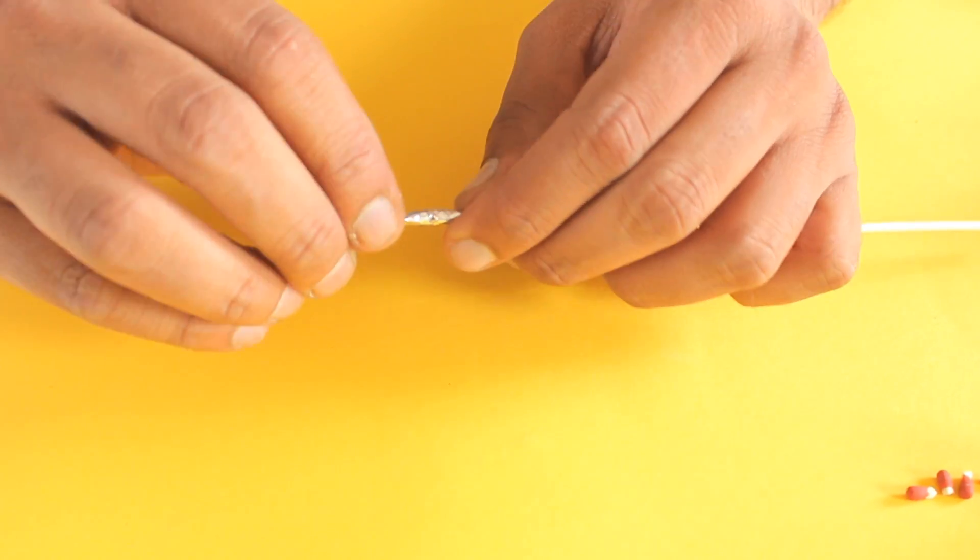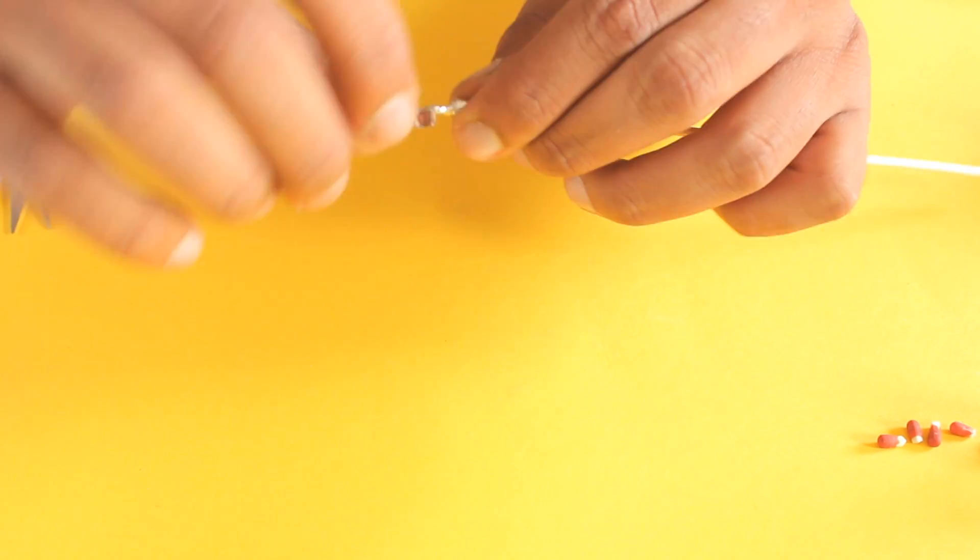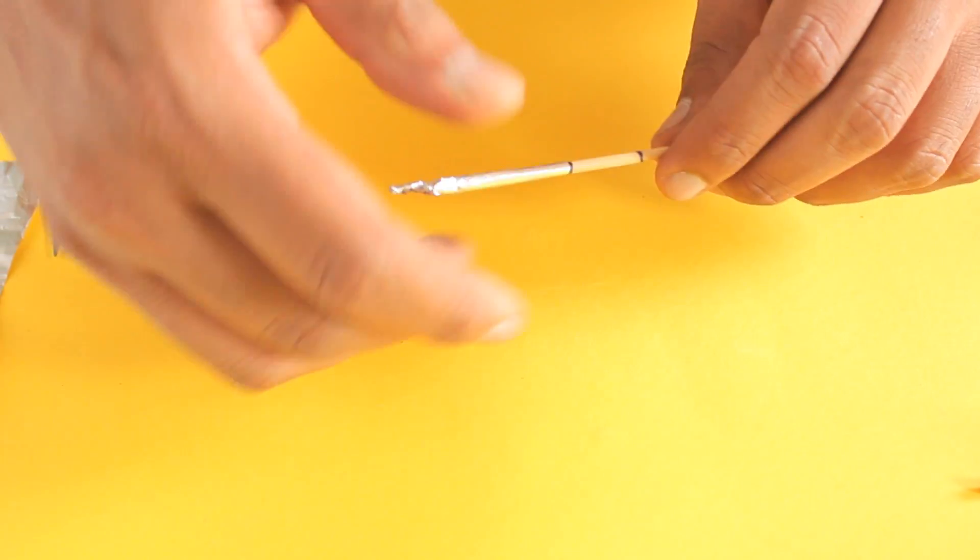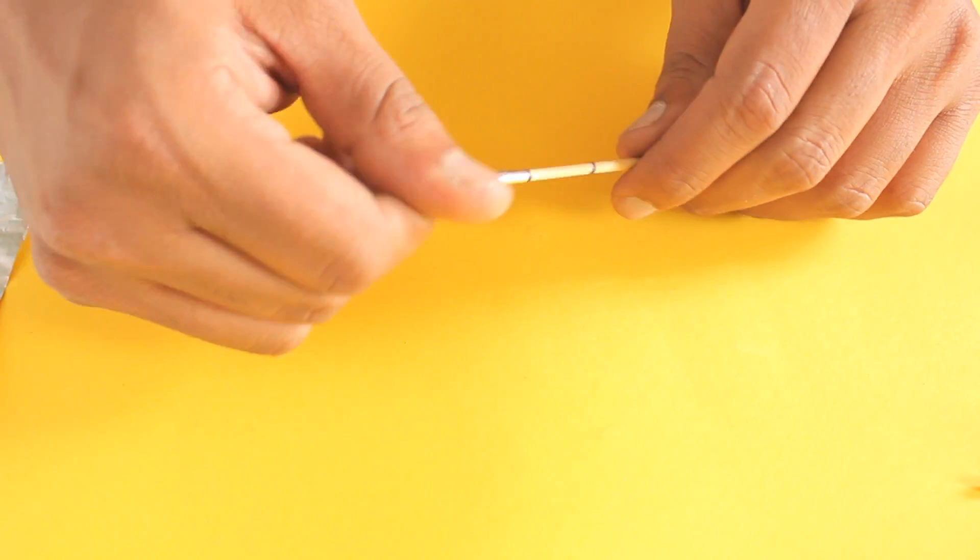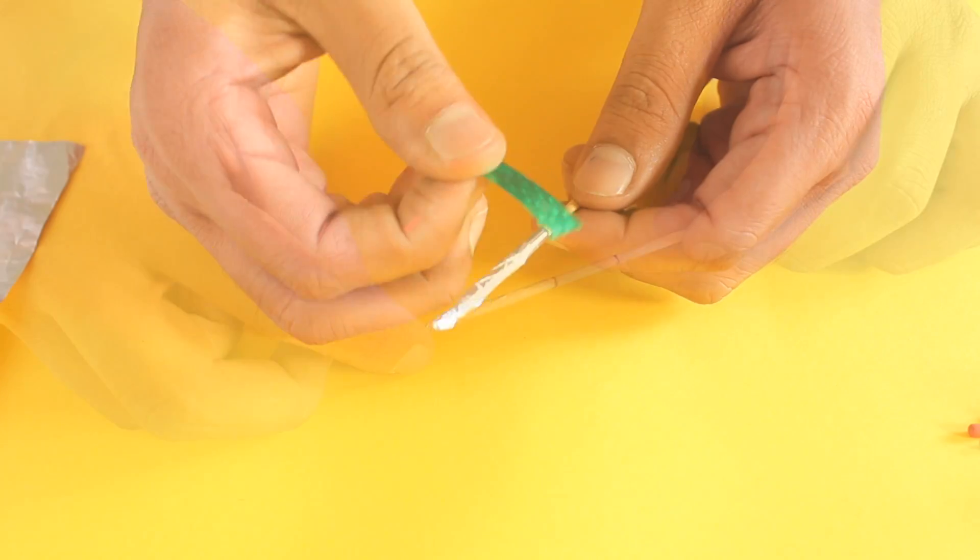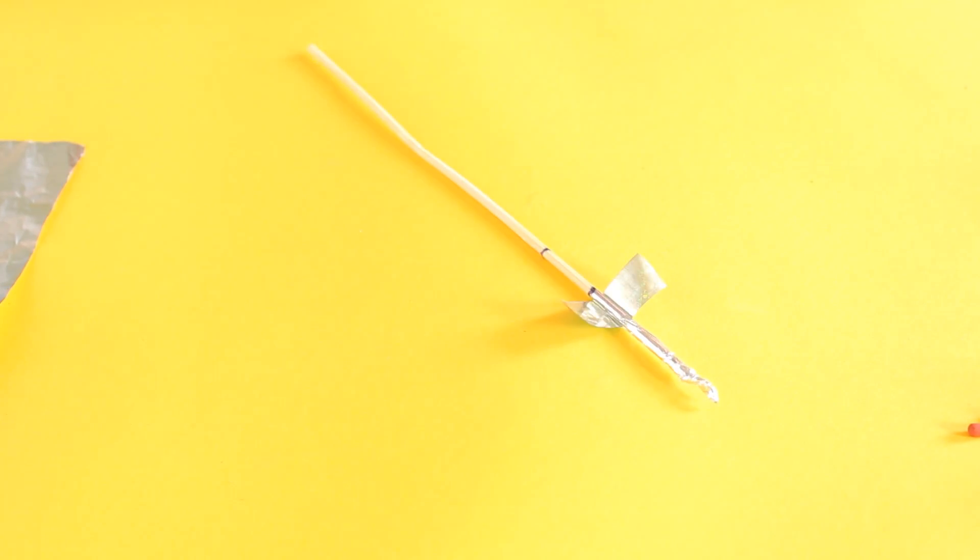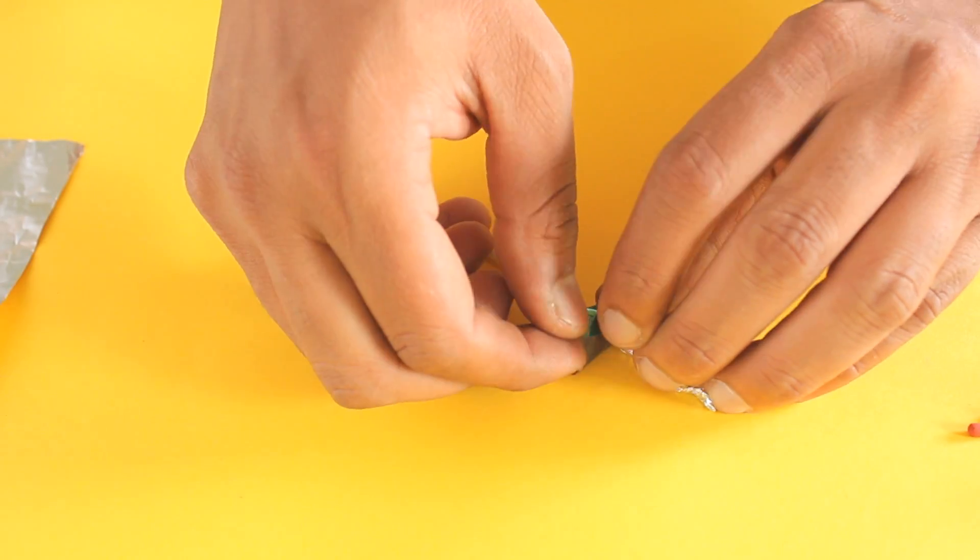Seal the above portion by twisting it tightly. Do not over twist. Now take the color tape and cut two small portions and stick them on both sides of the bottom part of the rocket.